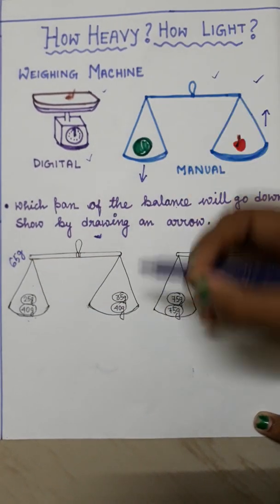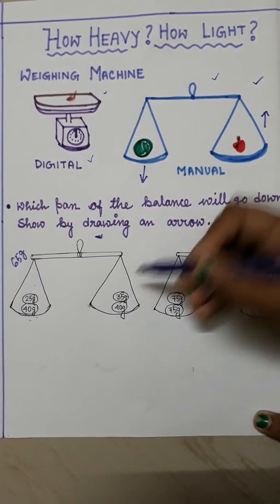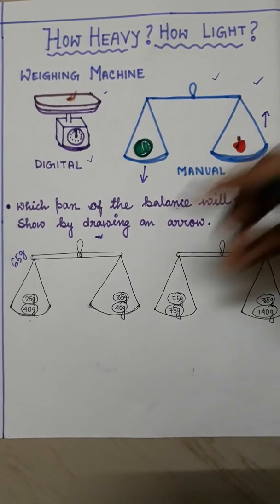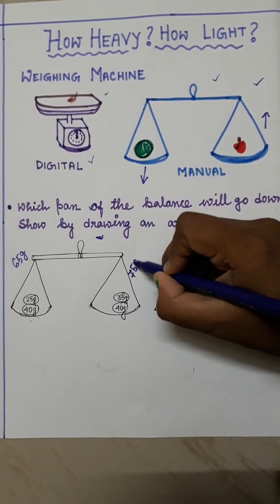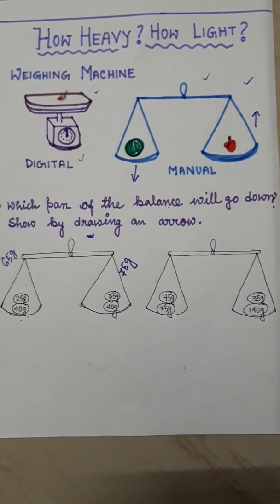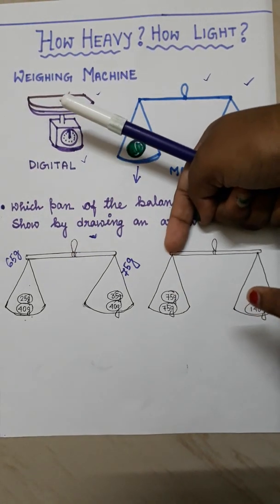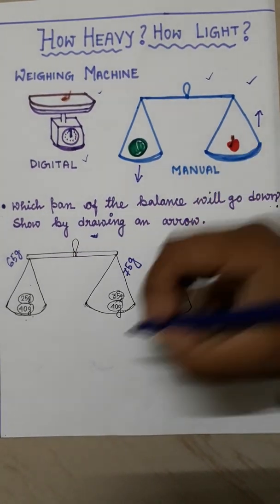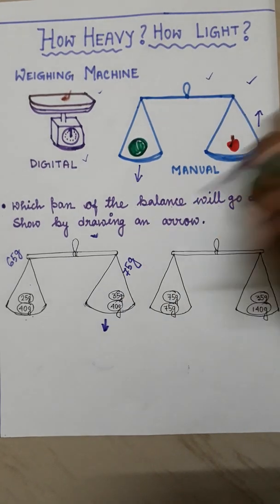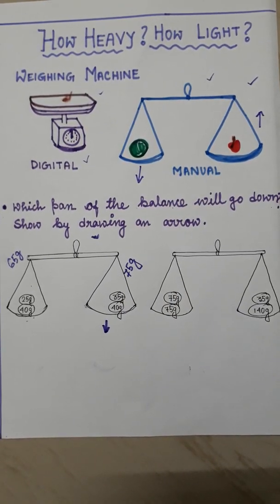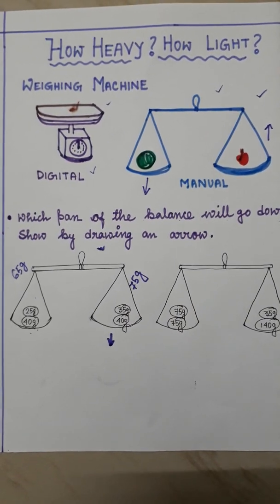And here 40 grams and 35 grams. What will be the total weight? 75 grams. So you can easily say which one is more, 65 or 75? 75. That means this side will go down. I will show it by a downward arrow sign.